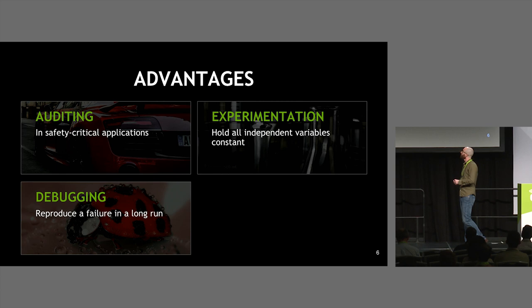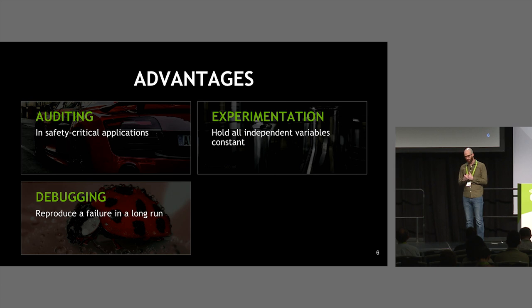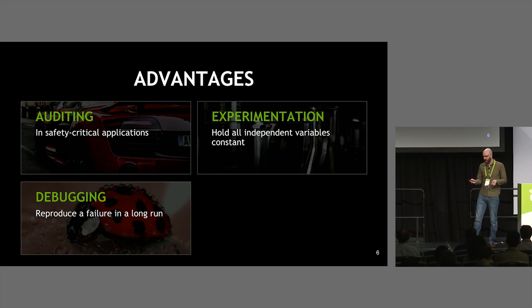Another advantage is experimentation. A lot of this is data science, and science involves holding independent variables stable while changing the one you want to test. A group doing model architecture enhancements found after a couple of weeks that the variation due to non-determinism was actually greater than the improvements they were making. They had no idea whether they were actually improving the model. It's like having Petri dishes randomly seeded with different bacteria and doing experiments on top of that.